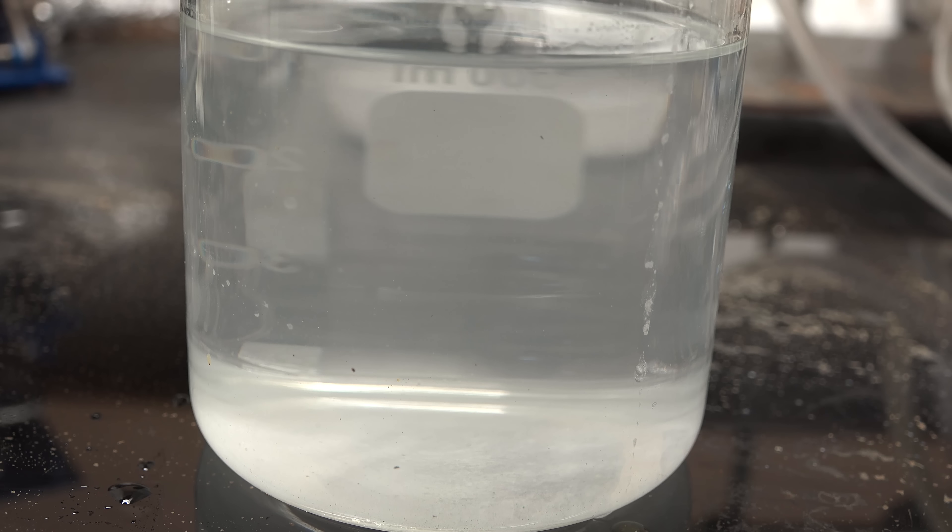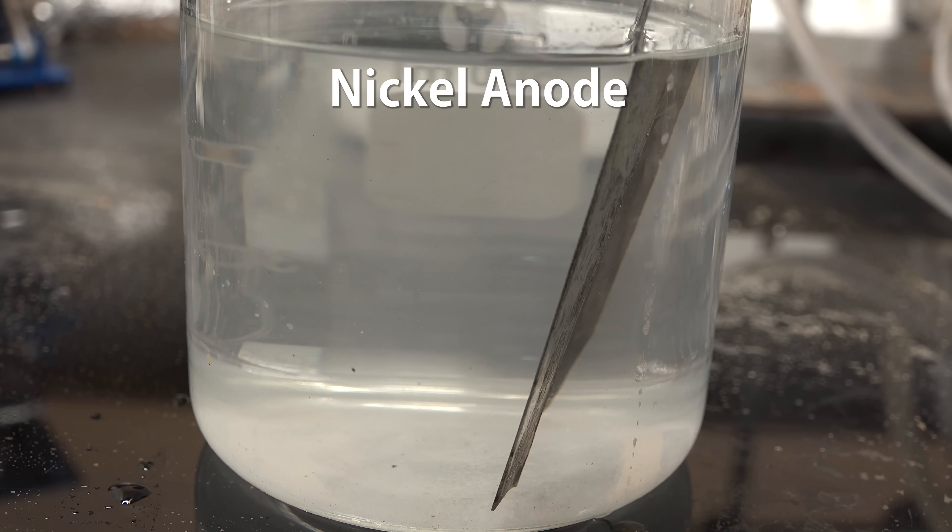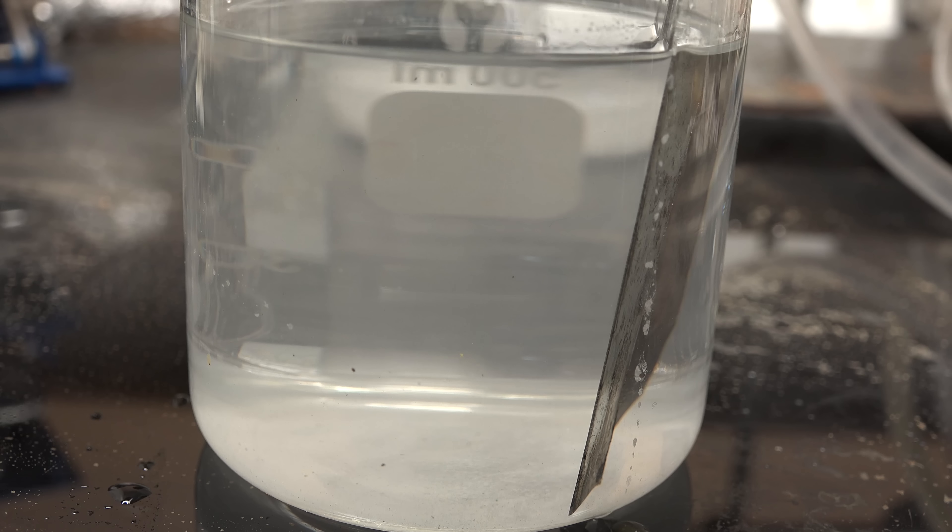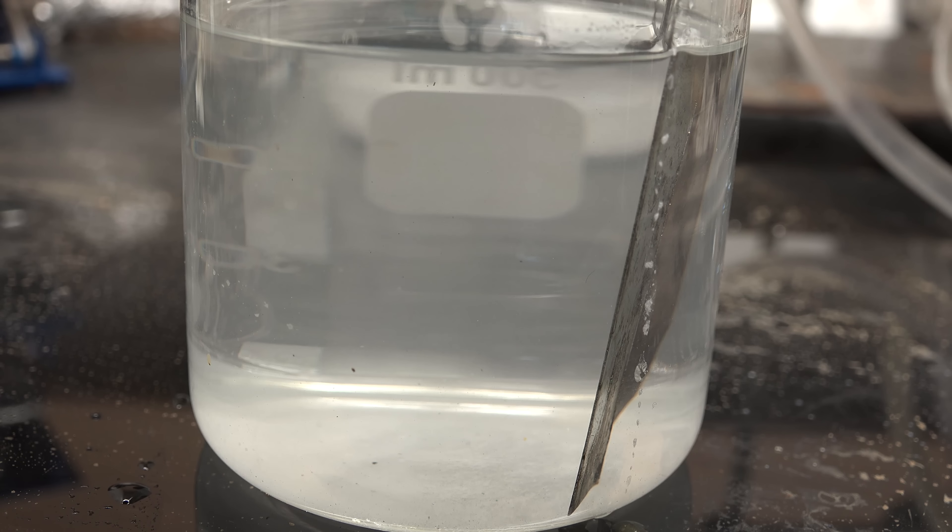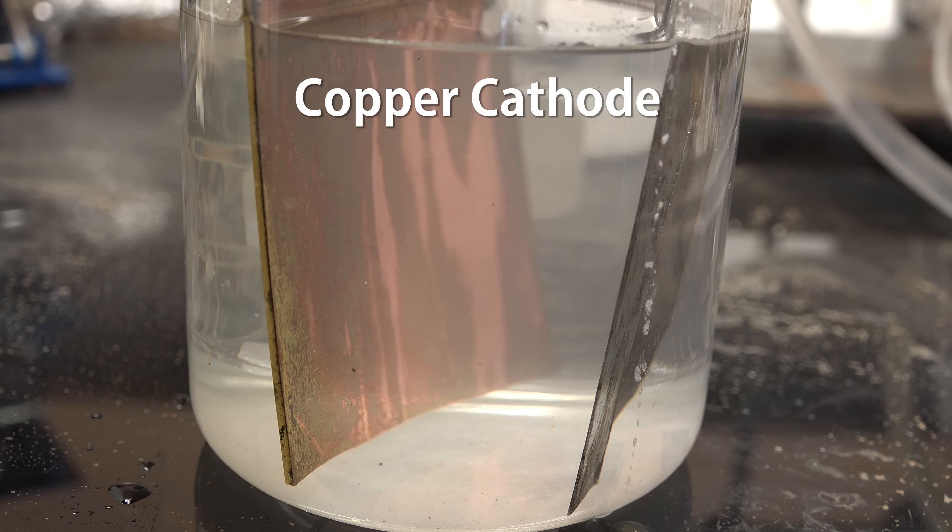Now we insert our electrodes. For the positive terminal or anode I'm going to use nickel strips. The great thing about this alkaline zincate process is that it's not as corrosive as acidic processes. Thus it can use cheaper and easier to obtain nickel electrodes rather than expensive platinum or toxic lead dioxide electrodes. For the negative terminal or cathode I'm going to use this copper circuit board. A zinc plate would be better but I didn't have one.